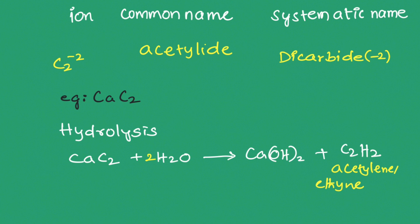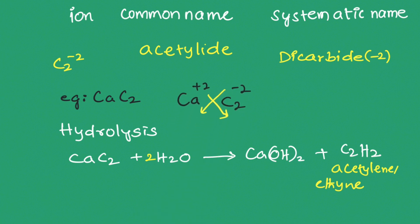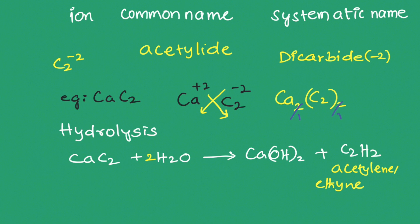Calcium has a +2 charge and carbide has a −2 charge. Using the crisscross method, we get calcium carbide where the subscripts cancel: two and two are cancelled, so we get the formula CaC₂. If the subscript is one, we don't write it, so the formula is simply CaC₂.